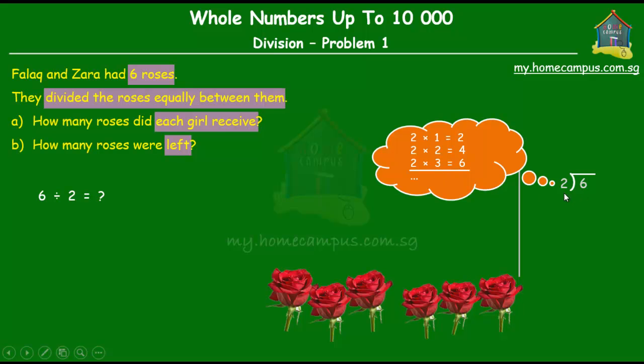So, when you do six divided by two, what you get is three. Two times three gives you six, and two times three gives you exactly six, which means there is no remainder at all.